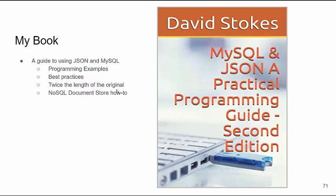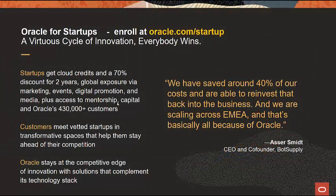If you're using JSON, I highly recommend my book MySQL and JSON: A Practical Programming Guide. The second edition has come out — lots of examples, best practices, over twice the length of the original. If you want to use the MySQL document store, this is a great guide. JSON in relational databases is a totally different animal and very practical. Also, if you are a startup, I highly recommend going out to oracle.com/startup — they have a program that gives you credits, advice, exposure, and do some marketing for you. You do have to be a startup.